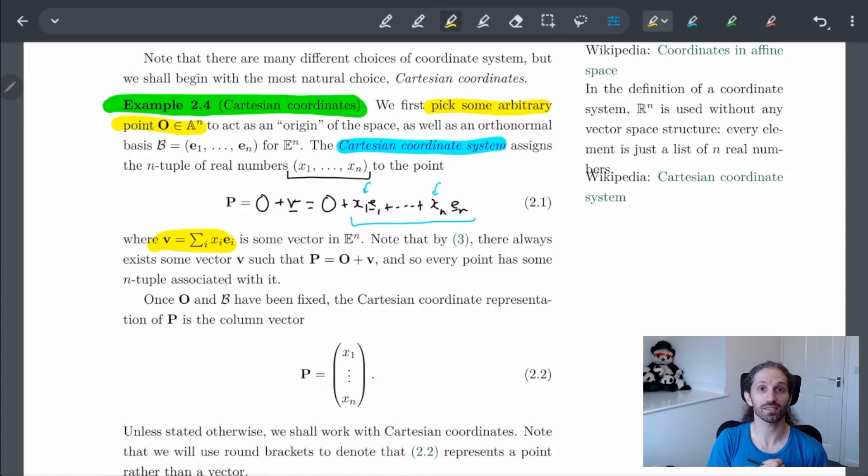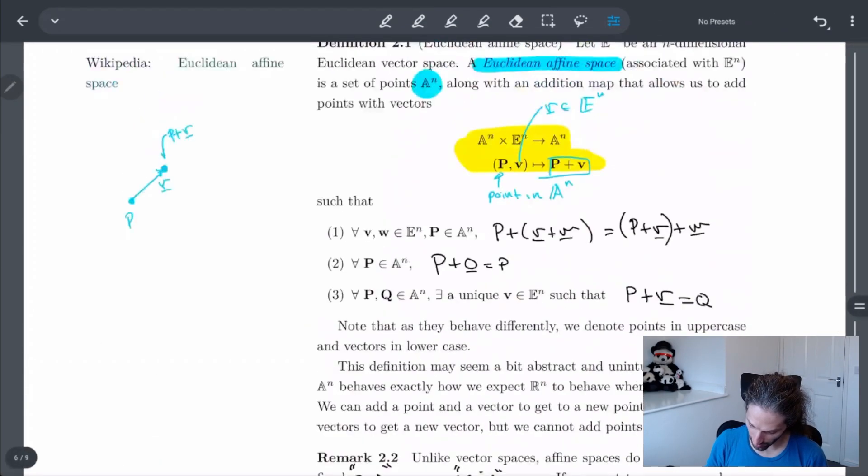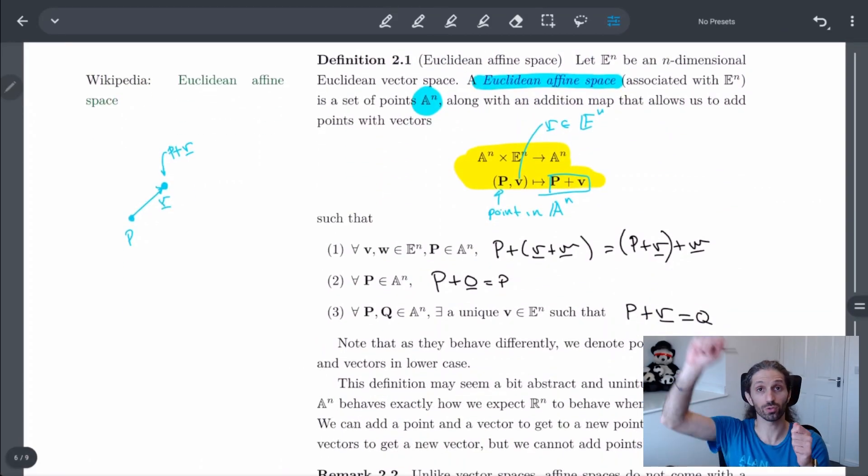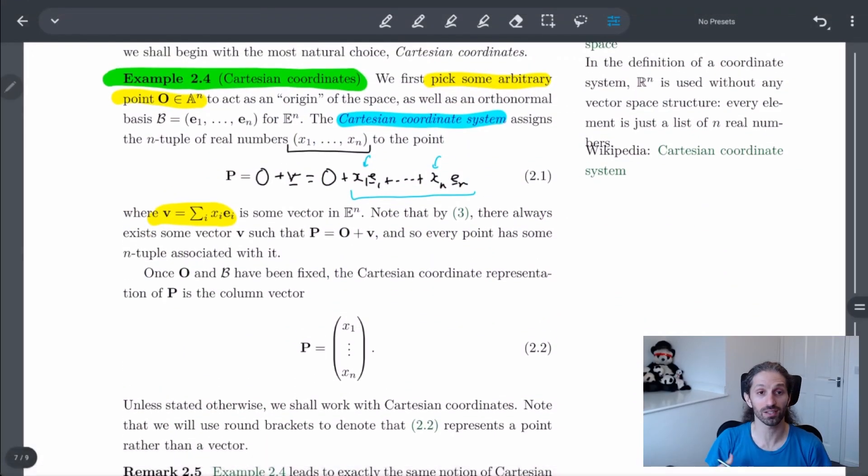Now the thing is, by our three axioms, this third axiom says there's going to be a unique way to find this. But this is basically saying every point can be defined in this way, every point has this. And so this allows us to define a Cartesian coordinate system for everything without a problem.